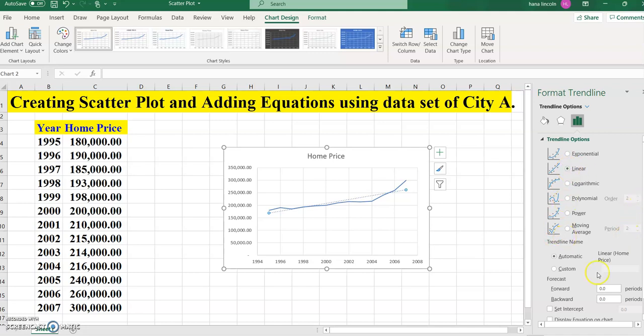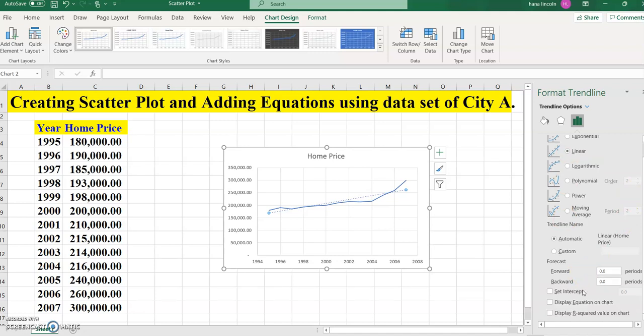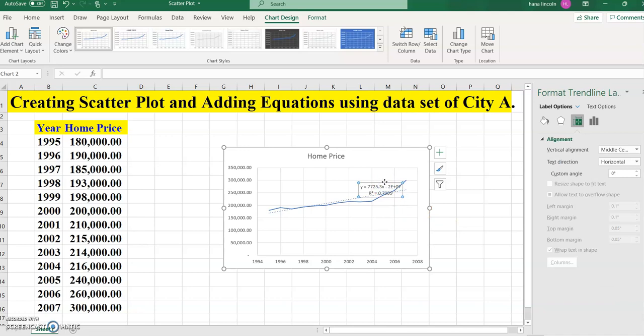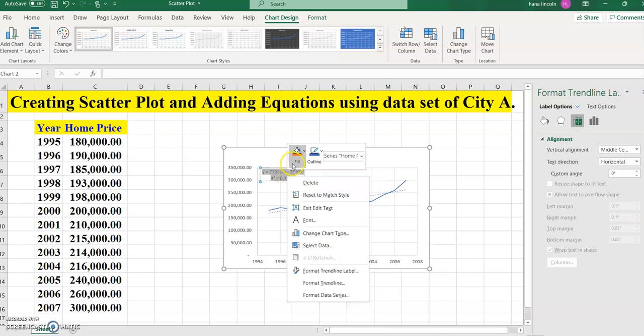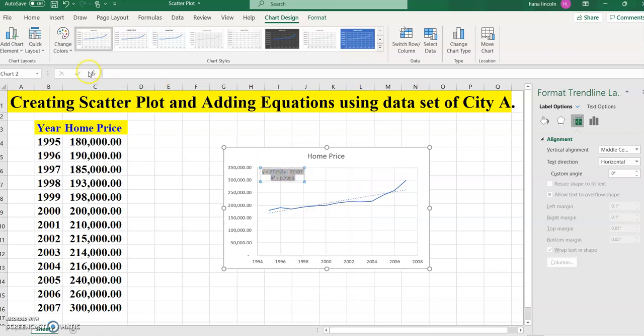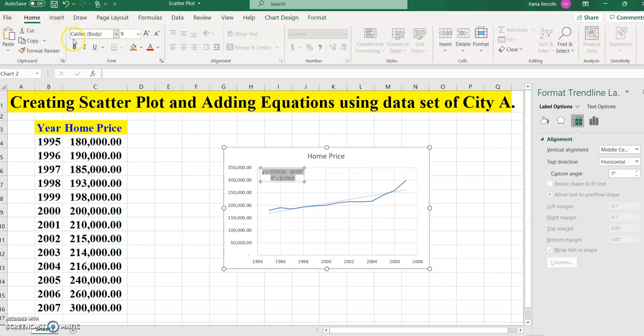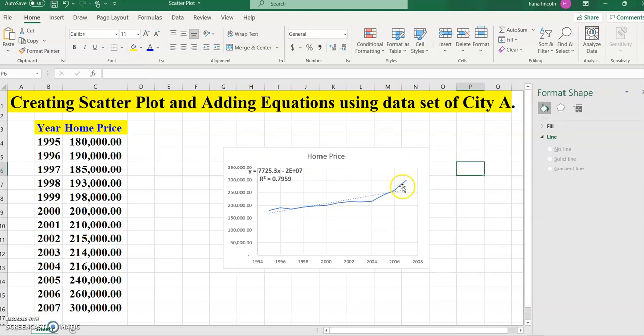Then by going down you're going to check display equation at the very bottom and display r squared value on chart. This can help you to create correlation coefficients. Now as you see here on the graph we have a linear equation. Let me make it a little bit larger. Click on the center, highlight it, right click, and go back to home. Let's increase the size, that's better.